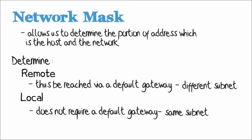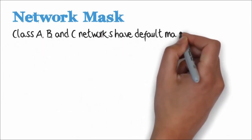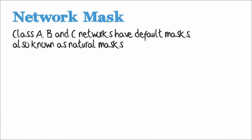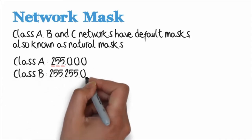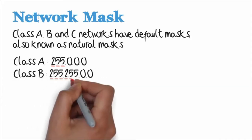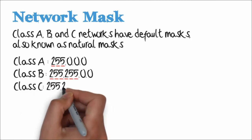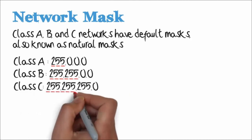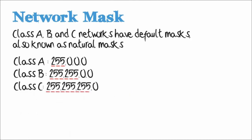That's essentially what a network mask does. As I've explained, class A, B, and C networks have default masks, which are also known as natural masks. In a class A address, the first octet is the network. In a class B address, the first two octets are network. And with a class C address, the first three octets are the network portion.